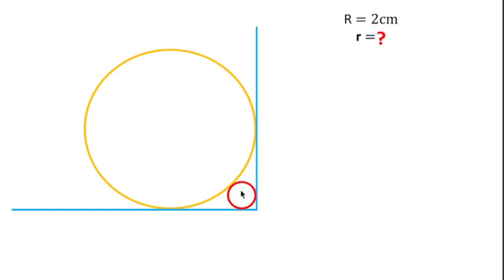To find the radius of the smaller circle, first I will consider this is the center for the larger circle and this is the center for the smaller circle.